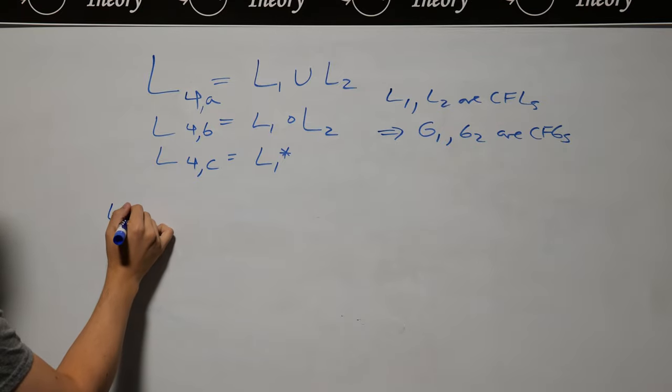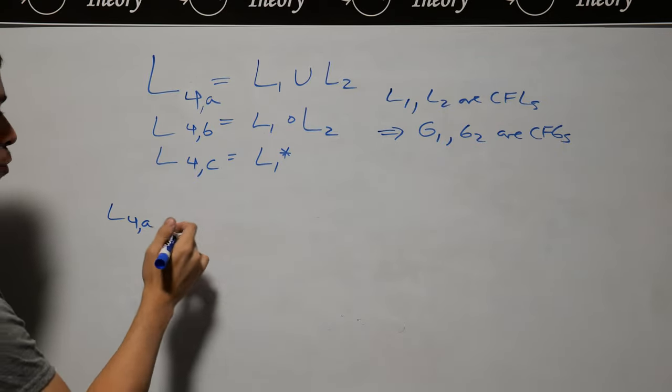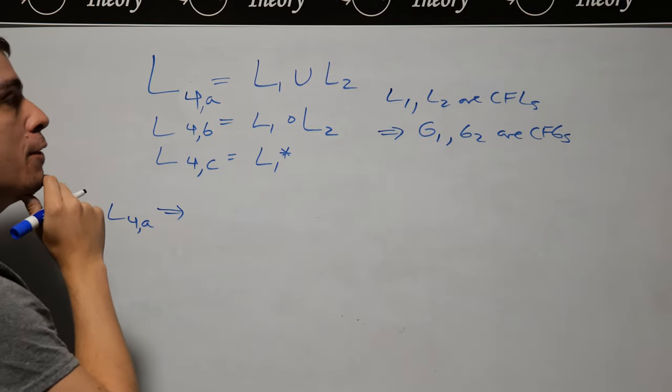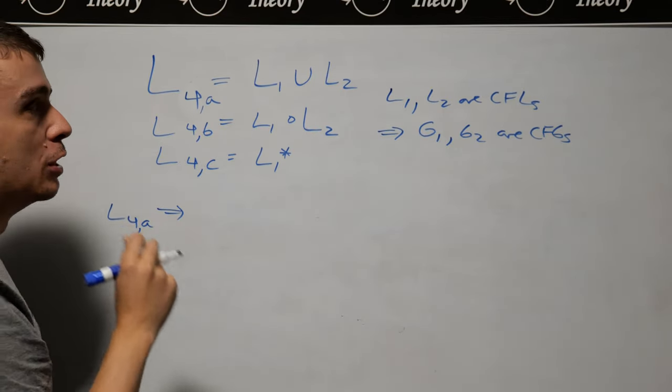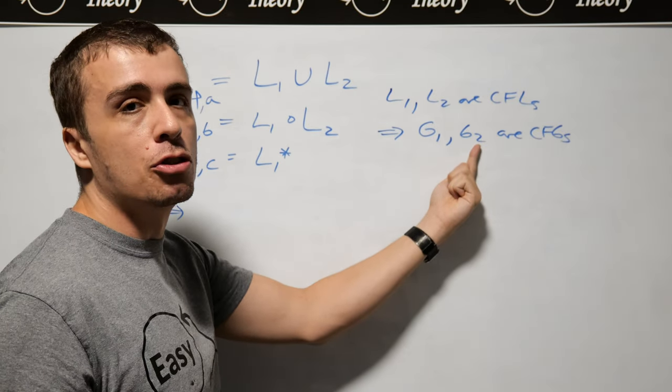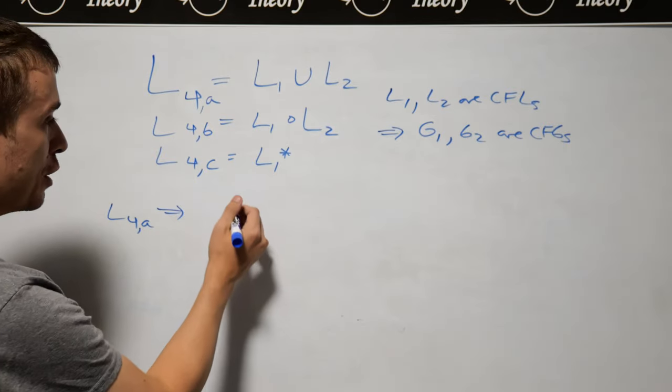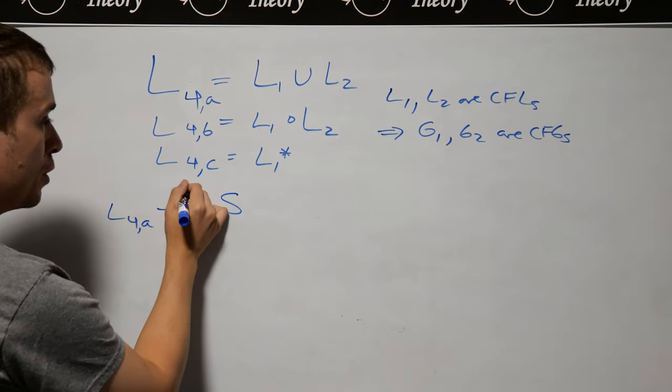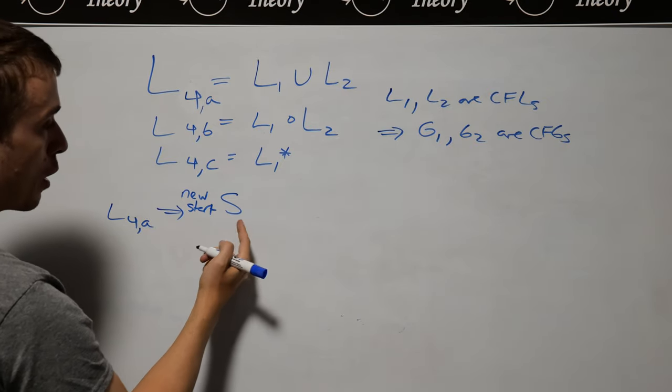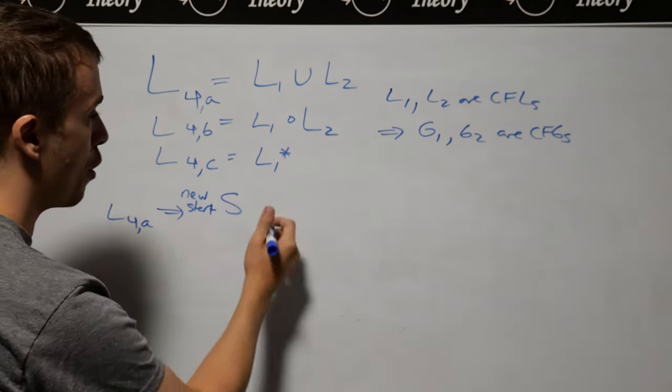So let's talk about the union one first, because it actually will generalize. So if we have the union of two context-free languages, then that means that either G1 can make the string that we're after, or G2 can make the string that we're after. What we can do is we can make a new start variable. So this is a new start variable.